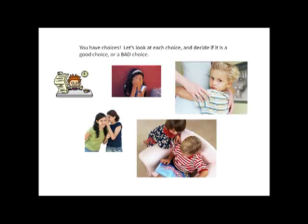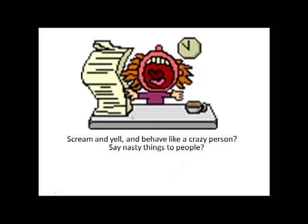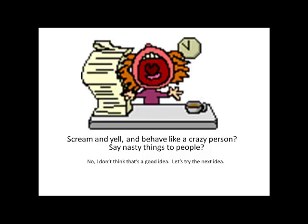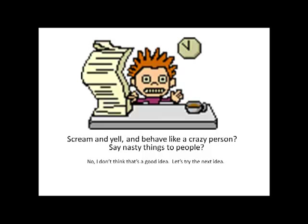Once the problem is identified, the program asks: how do you solve this problem? It provides choices as mini videos showing the actual behavior for each option. Some are good choices, some are not. The child gets a chance to look at each video individually and decide if it works, with a checkmark to indicate yes or no. The first negative choice is screaming, yelling, and saying nasty things to people — a very common reaction for an autistic child. The program responds: no, I don't think that's a good idea, let's try the next one. Another negative choice is hiding in a corner or under a chair and crying — again, not a good idea.